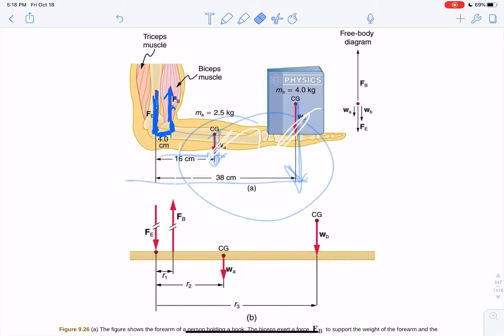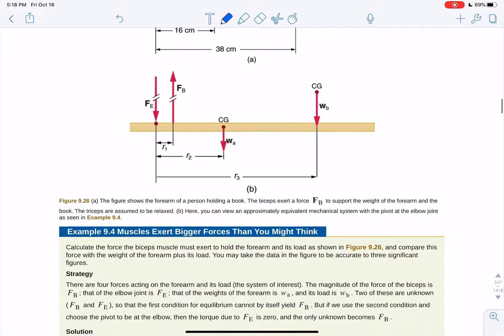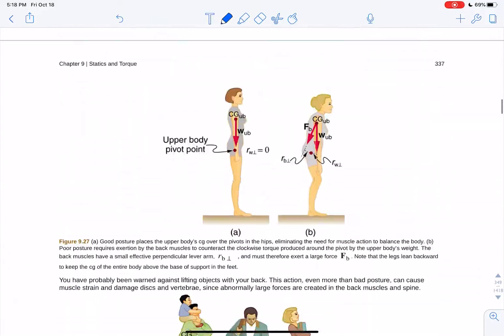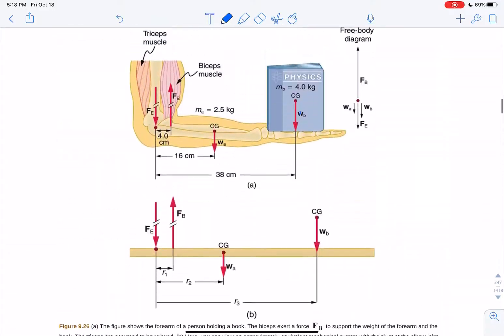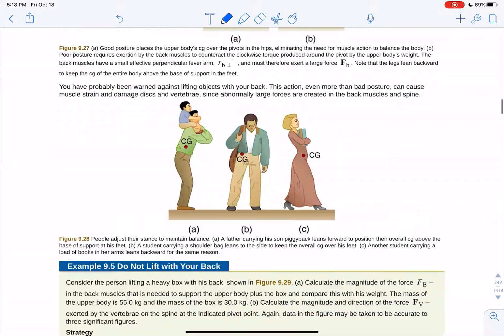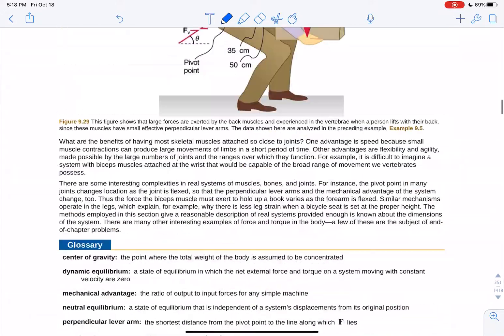The thing is about this one, going back here, this elbow force down here, since it's at what we're considering to be the point of the pivot point, the distance between that force and the pivot point is zero. So we don't consider that torque because it's the force times the zero, which is kind of cool.